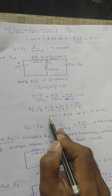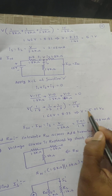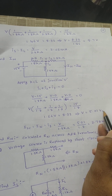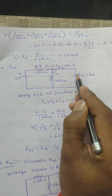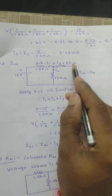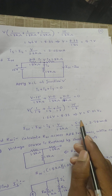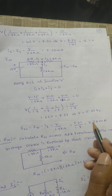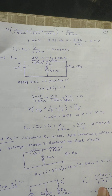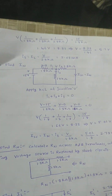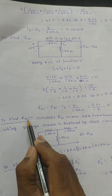After simplifying, 1.66V = 8.33, so node voltage V = 5.01 volts. The short-circuit current ISC (Norton's current IN) = I3 = V / 1.8 kΩ = 5.01 / 1.8 kΩ = 2.78 milliamperes. The calculation of Norton's current is now complete.